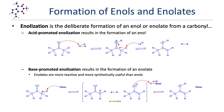Enolization is the deliberate formation of an enol or enolate from a carbonyl. The reaction can be promoted by both acid and base. Under acidic conditions, the carbonyl oxygen is protonated by the strong acid and an alpha proton is then removed by a weak base. Under basic conditions, the alpha proton is removed by the base to form a resonance-stabilized enolate. The oxygen can then be protonated by a weak acid if one is present.